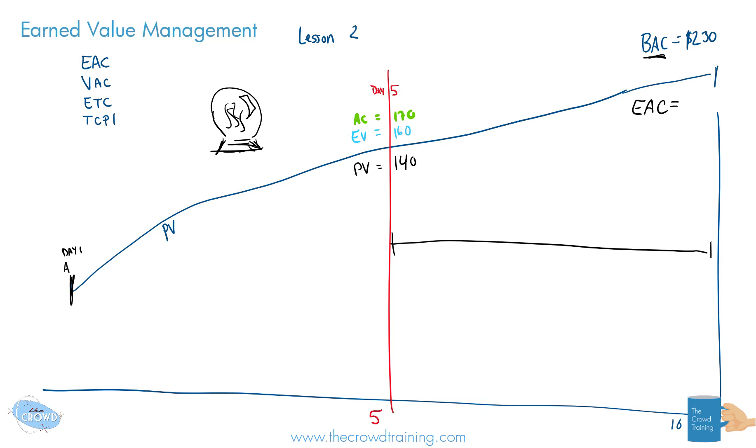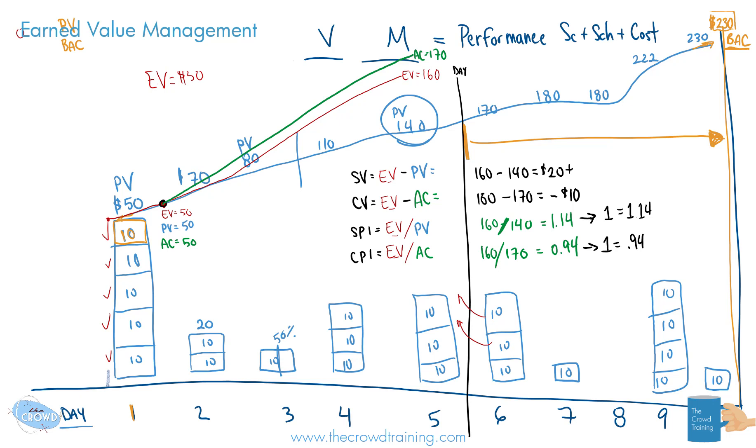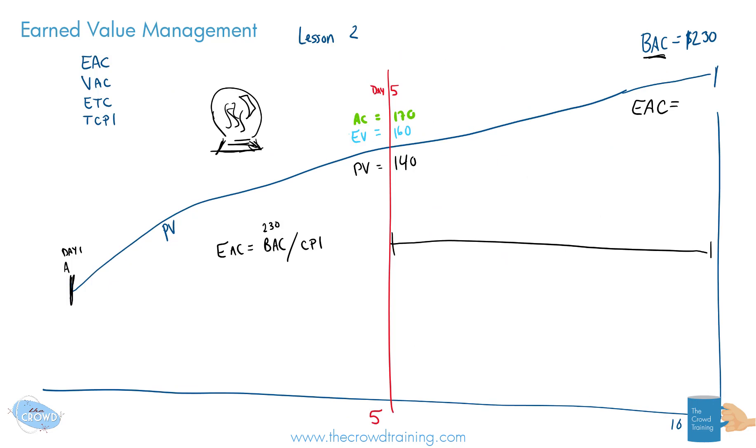A couple of these could be your estimate at completion could be your budget, which in this case is $230, divided by your cost performance index. Now, the cost performance index we did before, and that was here, about 0.94. So that would be divided by 0.94. Since I'm just using fudgy numbers, this may not work, but it could give us a result.